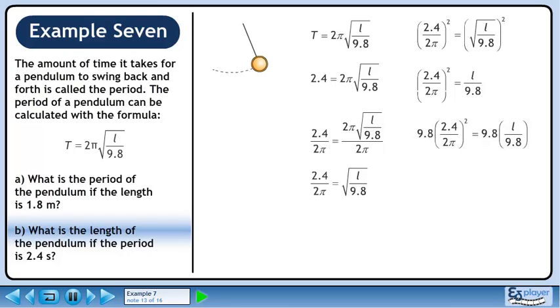Now multiply both sides by 9.8 to eliminate the fraction. We now have length by itself.